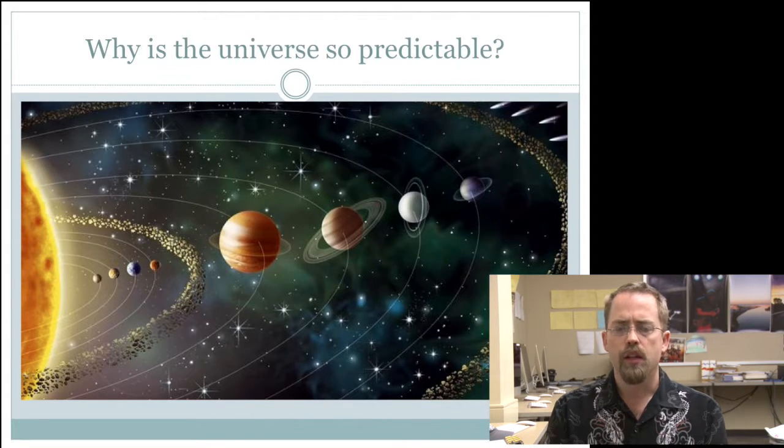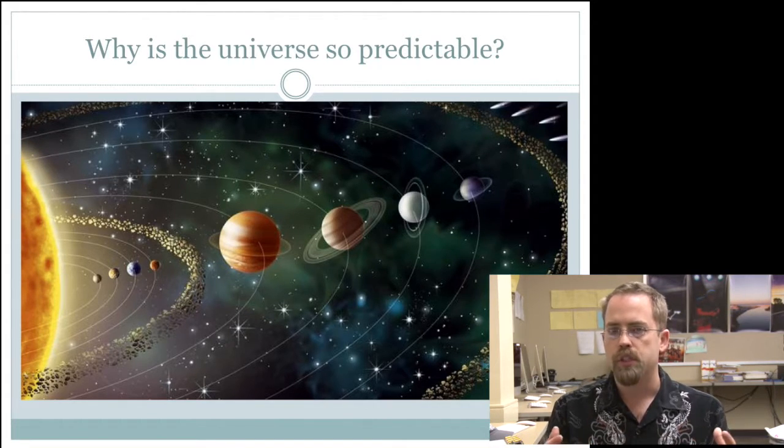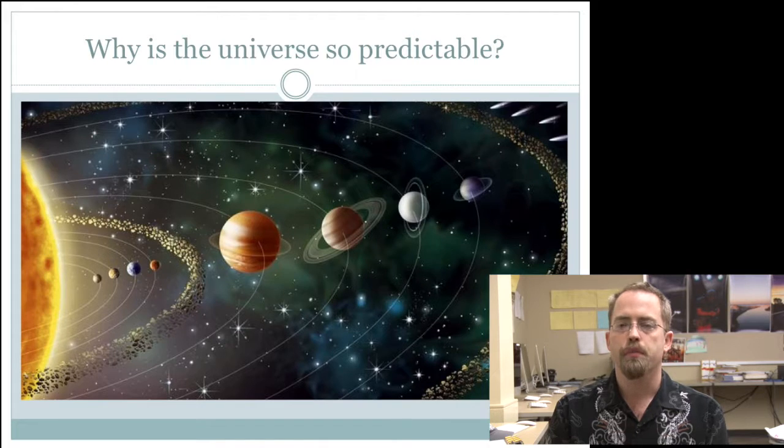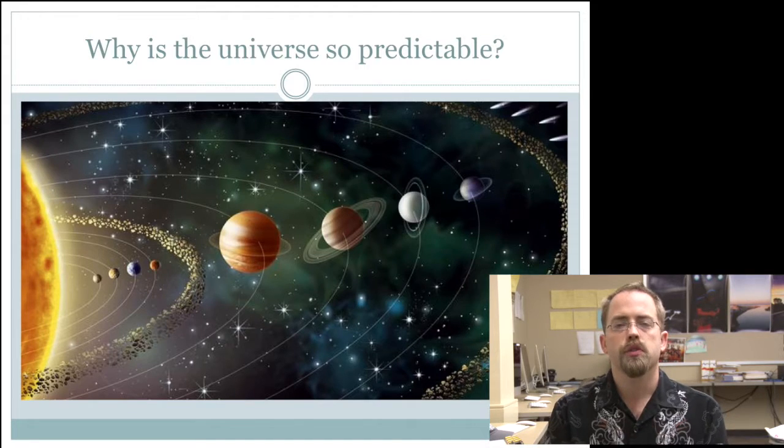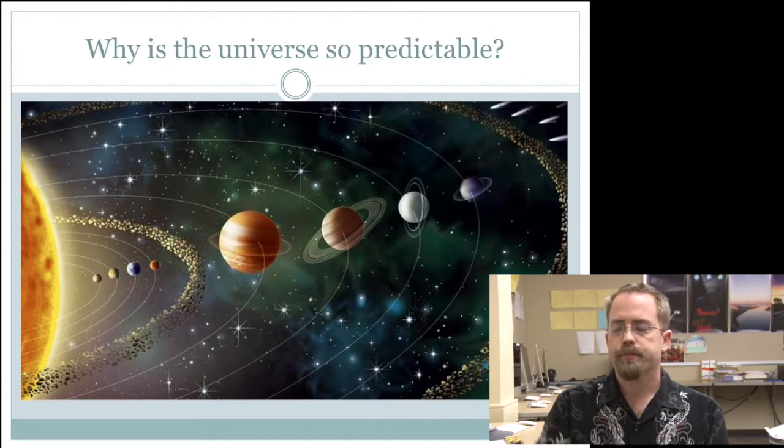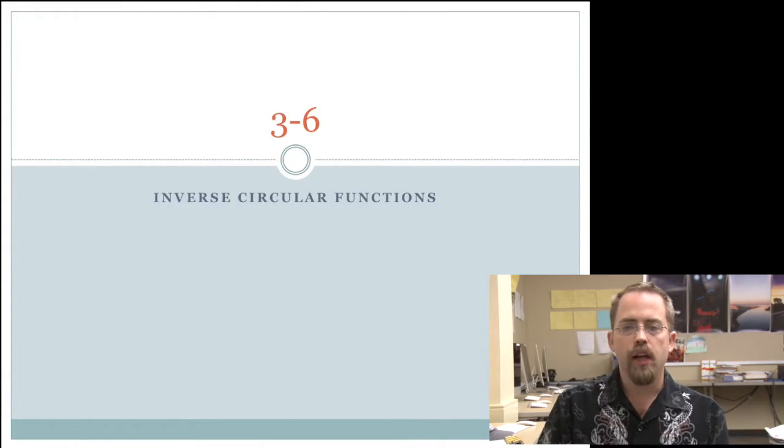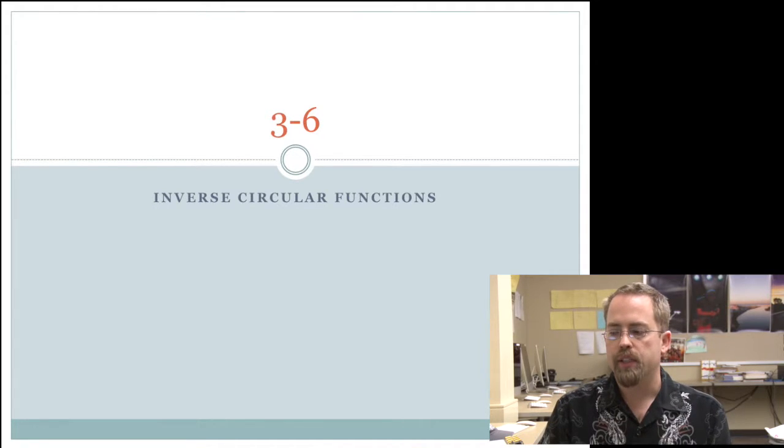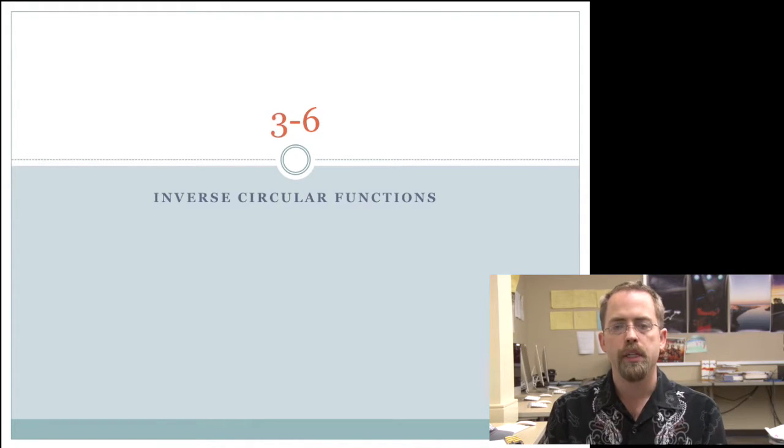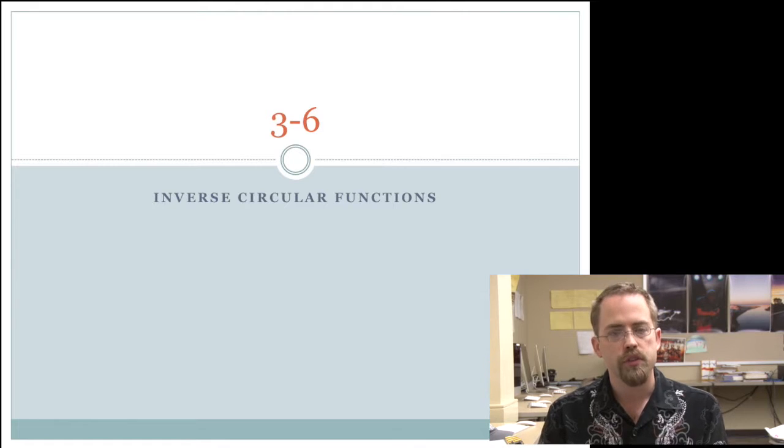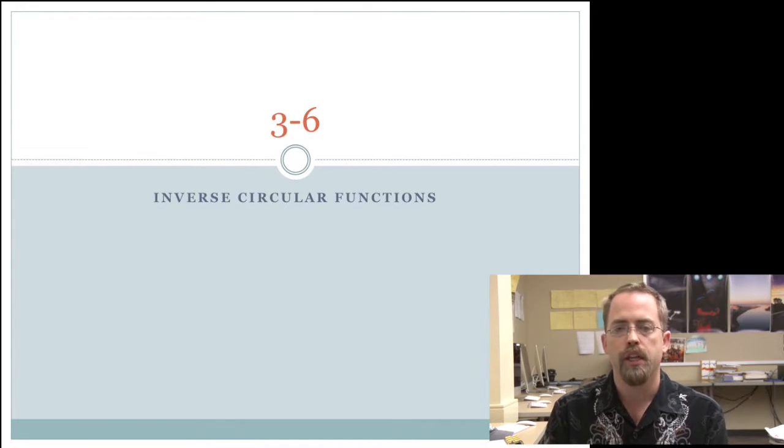So it's not like they're actually able to just come up with math just for the brain. So why is the universe so predictable? The topic in 3-6 is inverse circular functions. So if you had a calculator for any number of minutes, you've noticed that there are these inverse sine, inverse cosine, inverse tangent buttons on there. How do they work? What are these for? What do they do?